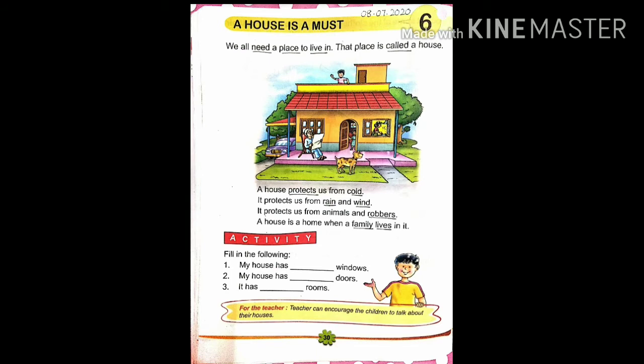It protects us from rain — rain means बारिश — and wind — wind means तेज हवा, आँधी. It protects us from rain and wind. इसके अलावा house हमारी protection करता है rain और wind से भी. जैसे बारिश के मौसम में बहुत तेज आँधी चलती है, तूफ़ान आता है, बारिश होती है — अगर उस टाइम भी हमारे पास house नहीं होगा तो हम सारे भीग जाएंगे और भीगने के बाद बीमार पड़ जाएंगे.